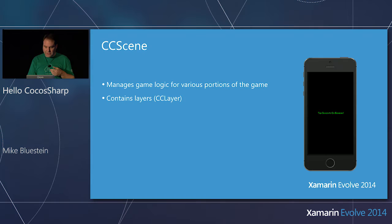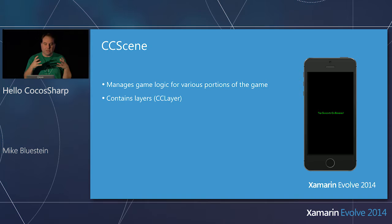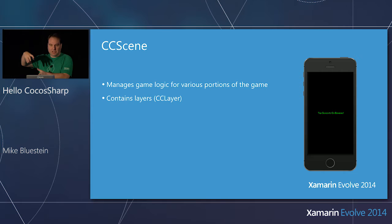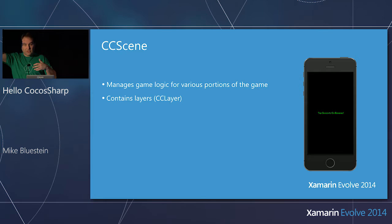A scene is like a screen — a level within a game. It's where you manage the game logic for that particular portion. You can factor things out so characters have logic built within them to be reusable across the game. A scene contains layers, and the layers are where you start building up all the nodes that make up your game.